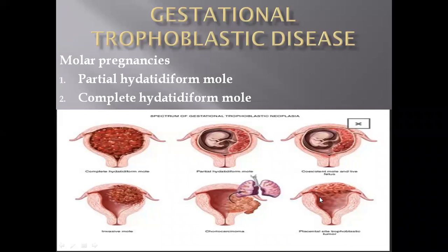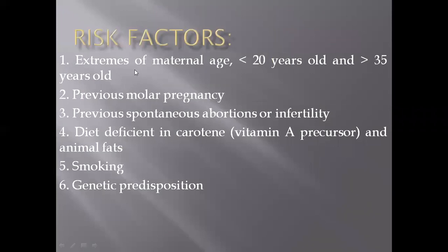The other neoplastic category is the placental site trophoblastic tumor, which occurs mainly at the site of implantation. Risk factors for overall molar pregnancy include maternal age below 20 years or above 35 years, history of previous molar pregnancy, history of previous spontaneous abortion or infertility, diet deficient in vitamin A precursor carotene, lack of animal fat in diet, history of smoking, and genetic predisposition.